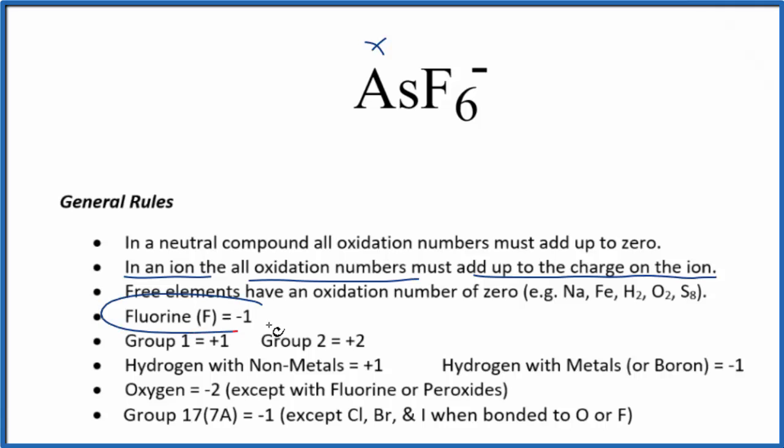We don't know what arsenic is, so we're going to put an X here. But fluorine is always minus one. For each one of these six fluorines, it's all going to add up to this one minus.